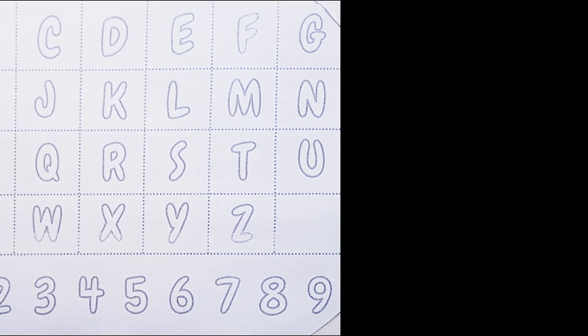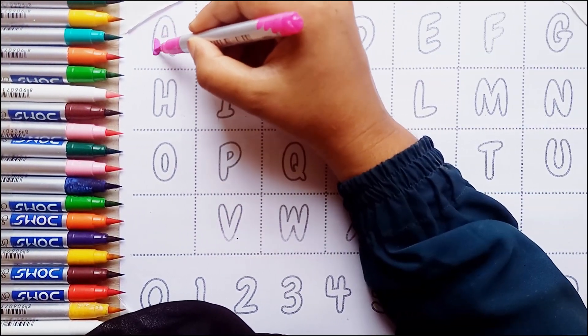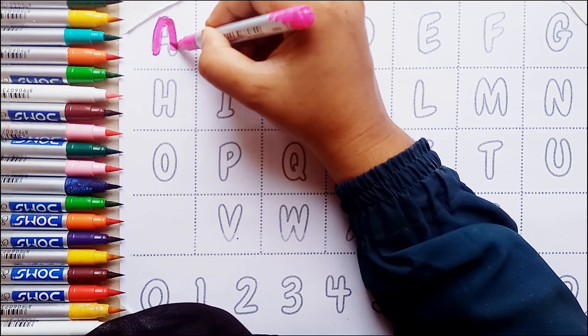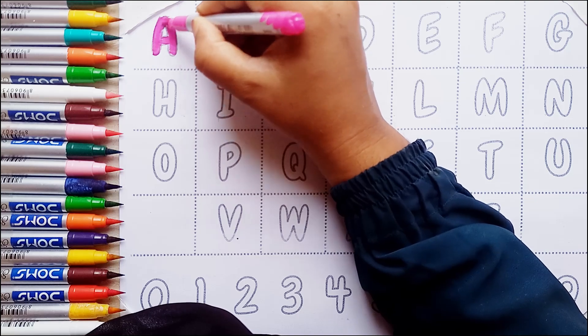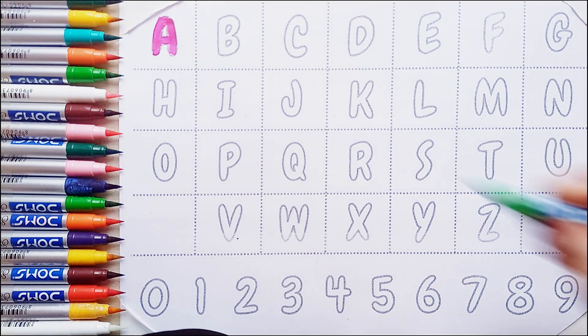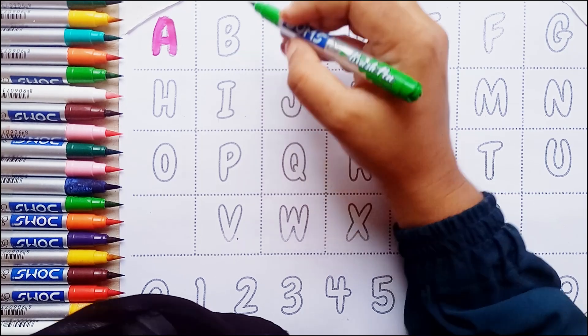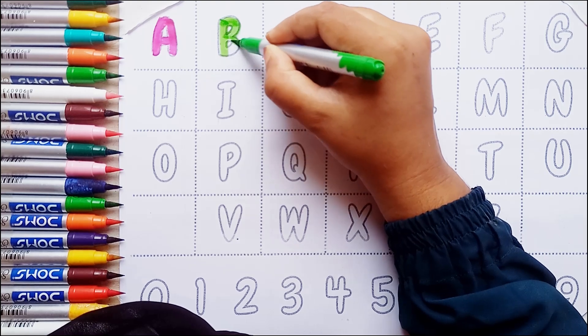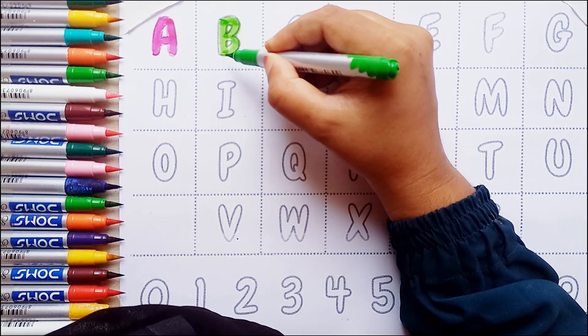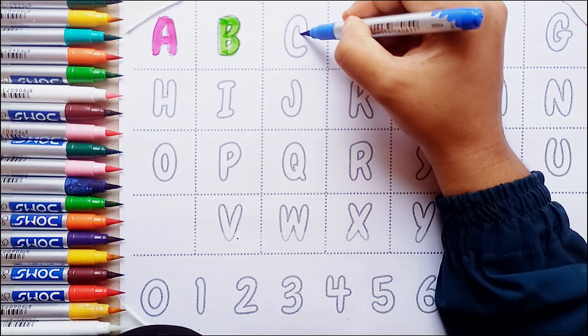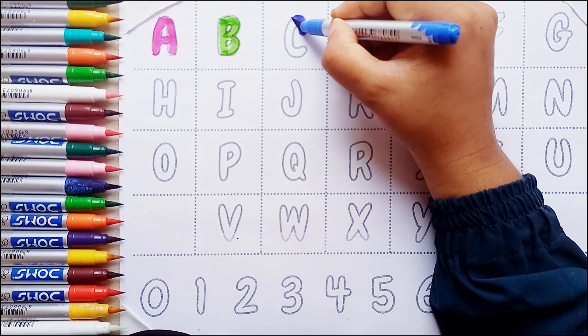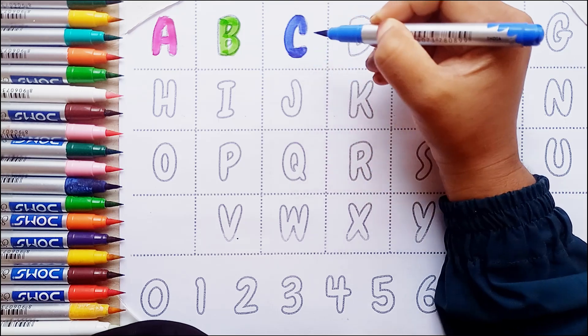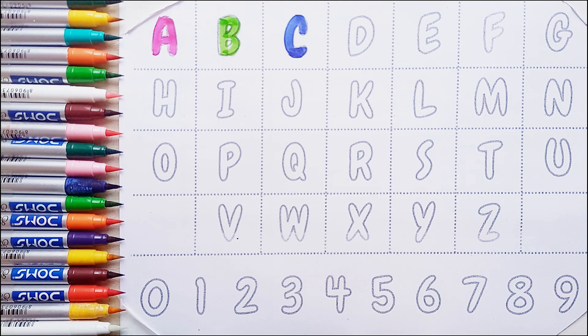Let's start. A, light green color. B, blue color. C, red color.